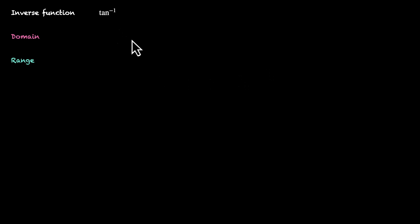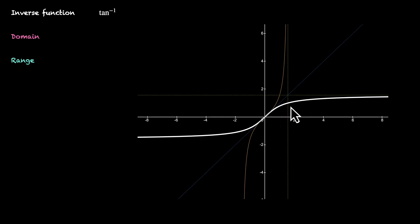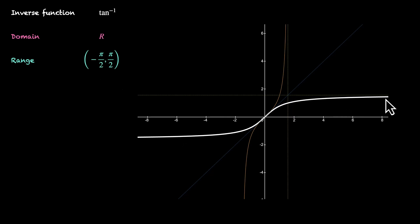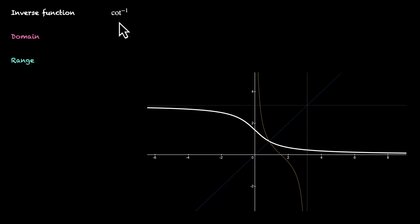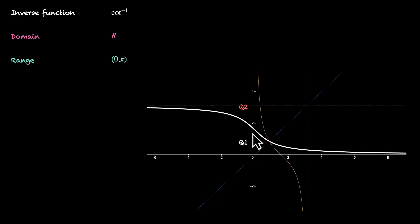The graph for tan inverse x is smooth — the mirror image of tan x in the line y equals x. The domain is the set of all real values, but the range is only from minus π/2 to π/2. It never hits π/2 or minus π/2 — these are asymptotes. Q1 and Q4 are visible in the graph. For cot inverse x, the domain is again the set of all real values, but the range is zero to π. This graph also sits above the x-axis, with Q1 covering zero to π/2 and Q2 covering π/2 to π.